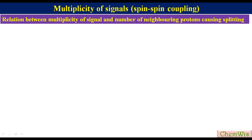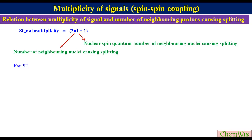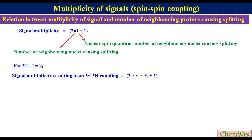Relation between multiplicity of a signal and number of nuclei causing multiplicity. The multiplicity of a signal is equal to 2NI plus 1, where N is the number of neighboring nuclei causing multiplicity and I is the nuclear spin quantum number of the nuclei causing multiplicity. For the proton, I is equal to half. So the signal multiplicity arising from proton-proton coupling is equal to 2 × N × (1/2) + 1, which equals N plus 1.